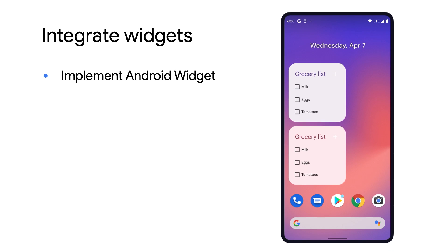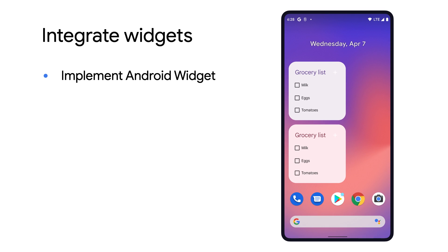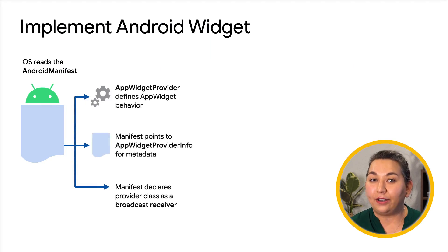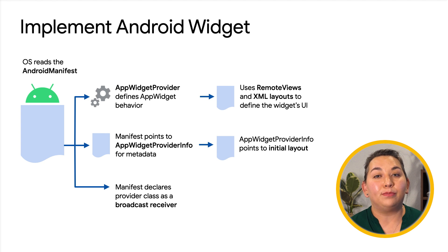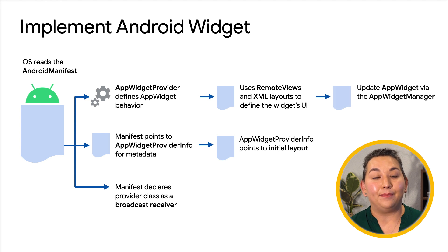Now let's dive into how to integrate your Android widgets to Assistant. Any existing widget can be configured for Assistant widget fulfillment. If you don't have one already, let's go over a few key concepts of implementing an Android widget. Widgets are a great way for users to quickly monitor information, complete tasks, or be inspired from their home screens — think of them as an at-a-glance view of an app's most important data and functionality. Widgets need elements like App Widget Provider to define the widget's behavior, the App Widget Provider Info for its metadata, and the Broadcast Receiver to allow for triggering of the widget.